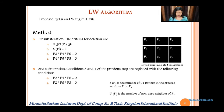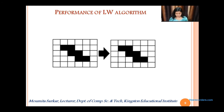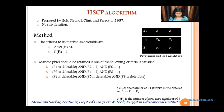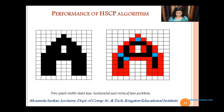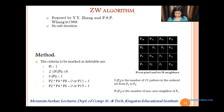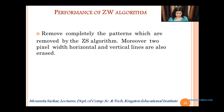We have the LW algorithm. The only difference is that instead of 2, we are using 3. This is the performance of the LW algorithm — this exact line remains intact. We have the HACCP algorithm; this is its method and performance. The black dots in the second image represent the actual image after the skeletonization process. We have the ZW algorithm, which uses a 16-neighbors concept. Its performance will remove all patterns removed by ZS algorithm; however, 2-pixel wide horizontal and vertical line problems are still present.